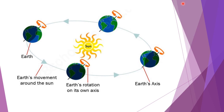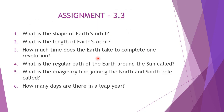Now it is time for the assignment. What is the shape of the earth's orbit? What is the length of the earth's orbit? How much time does the earth take to complete one revolution — write the exact and the approximate values. What is the regular path of the earth around the sun called? What is the imaginary line joining the north and south poles called? How many days are there in a leap year? That's all for today, children — we will meet in the next class. Bye.